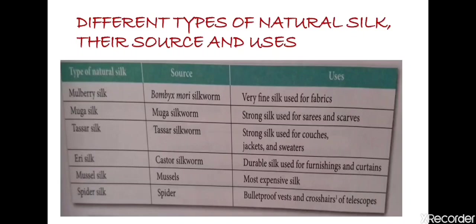Next, Tusser silk is obtained from the Tusser silkworm and is also a strong silk used for couches, jackets, and sweaters. We also have Eri silk, Mussel silk, and Spider silk, with their sources and uses listed in the table. Out of all these types, the most expensive silk is Mussel silk.